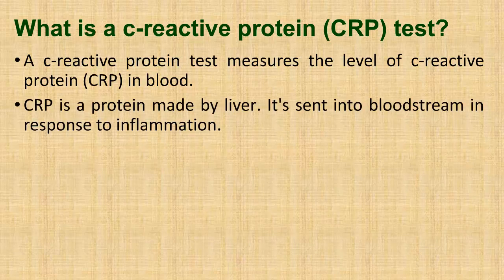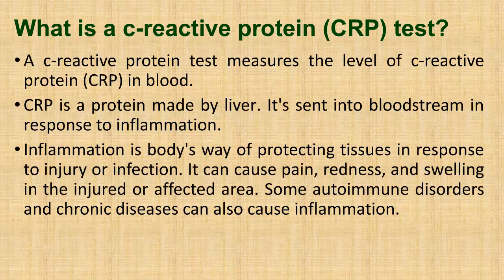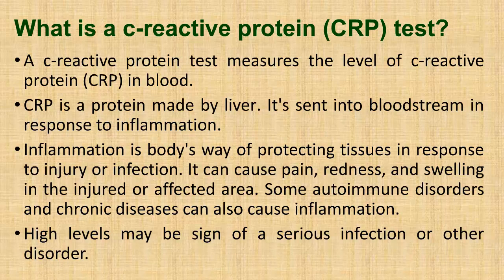CRP is a protein made by the liver. It's sent into the bloodstream in response to inflammation. Inflammation is the body's way of protecting tissues in response to injury or infection. It can cause pain, redness, and swelling in the injured or affected area. Some autoimmune disorders and chronic diseases can also cause inflammation. High levels may be a sign of a serious infection or other disorder.